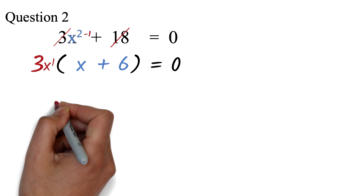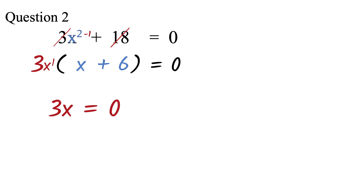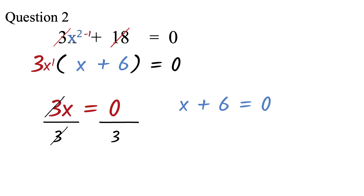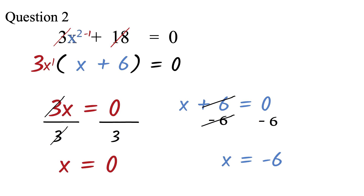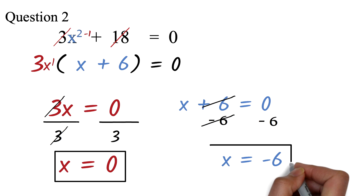Now to solve, we say either 3x equals 0 or x plus 6 equals 0. Dividing both sides by 3 gives x equals 0. For x plus 6 equals 0, we subtract 6 from both sides — the 6 cancels and 0 minus 6 is negative 6, so x equals negative 6. Our answers are x equals 0 or x equals negative 6.